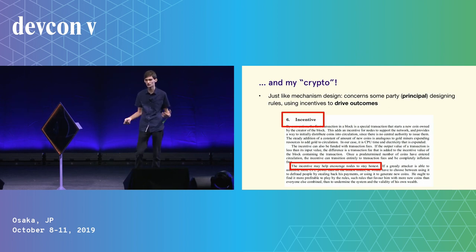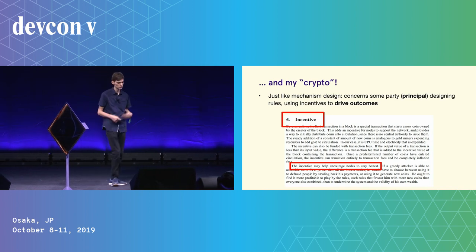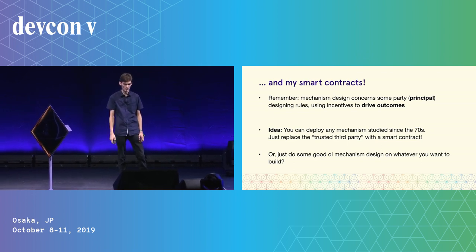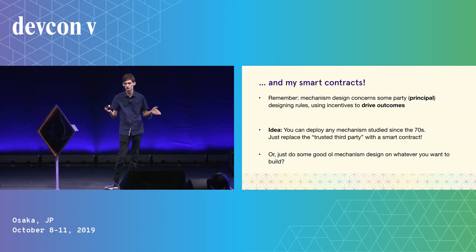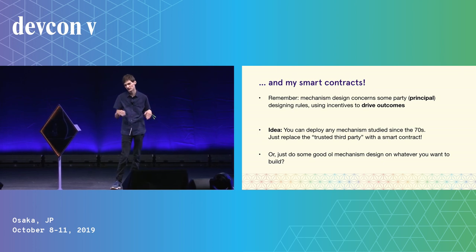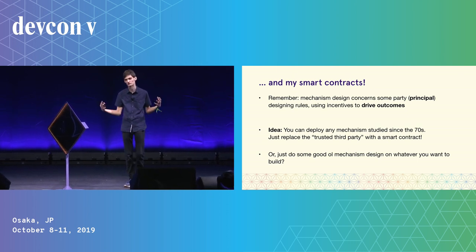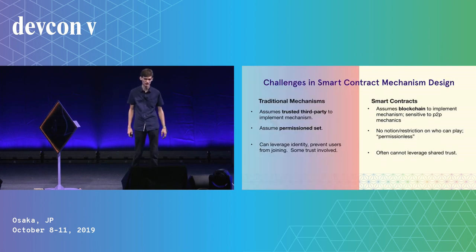Cryptocurrency has continued this broad tradition of mechanism design — using incentives to drive outcomes. This is seen in the Bitcoin white paper, where Satoshi Nakamoto talks about how incentives may help nodes behave honestly. Smart contracts have similar overlaps: you can take any mechanism studied for decades, make it a smart contract, get rid of the trusted third party or auctioneer, put it on chain, and converge on code instead of a trusted person.